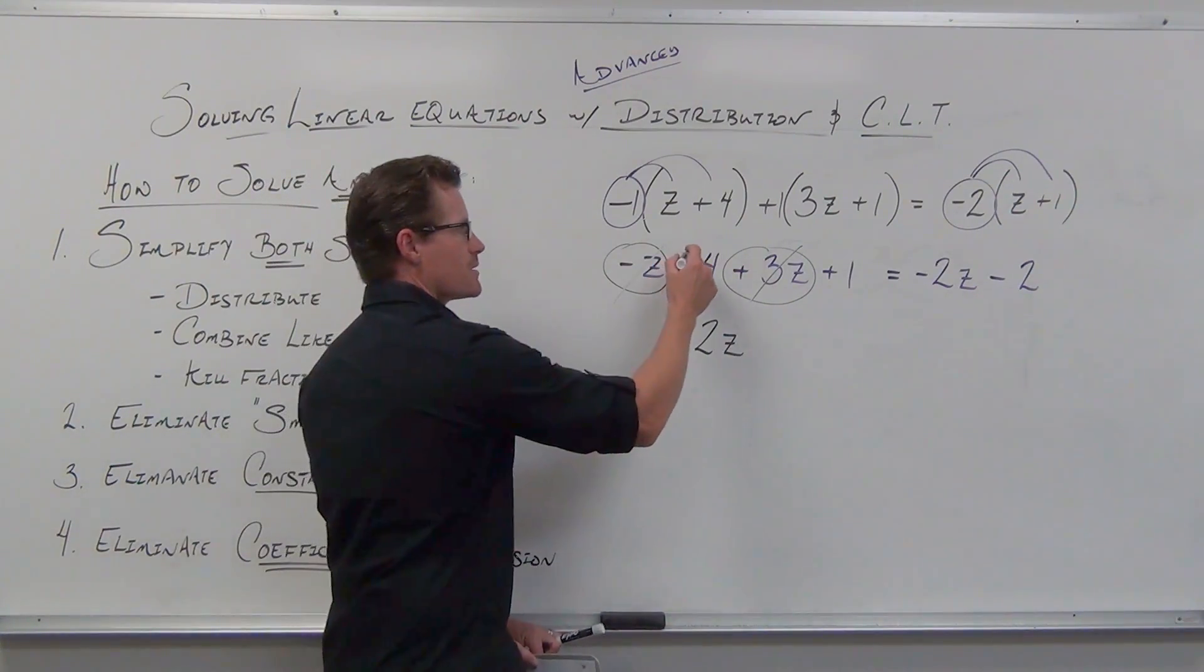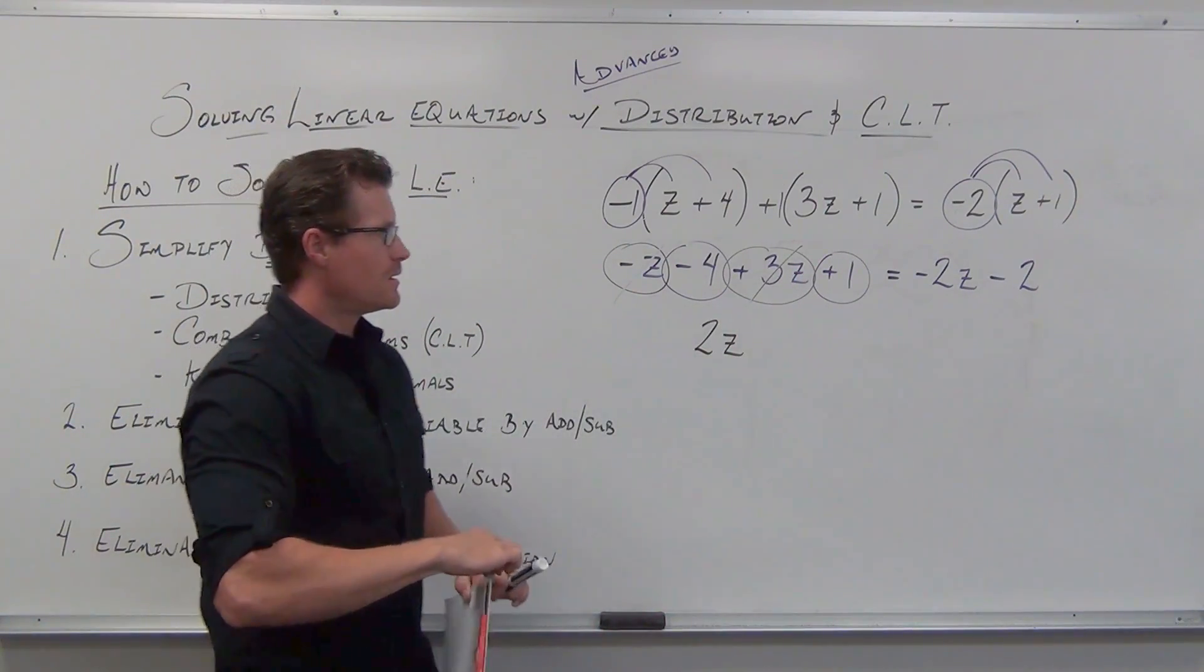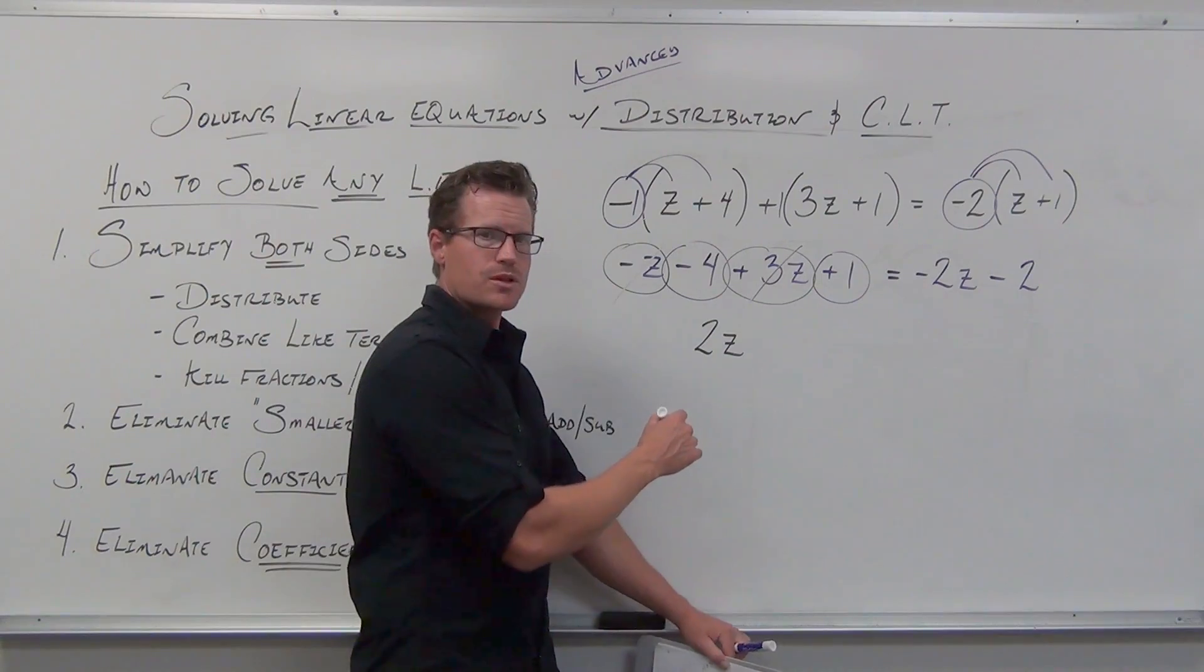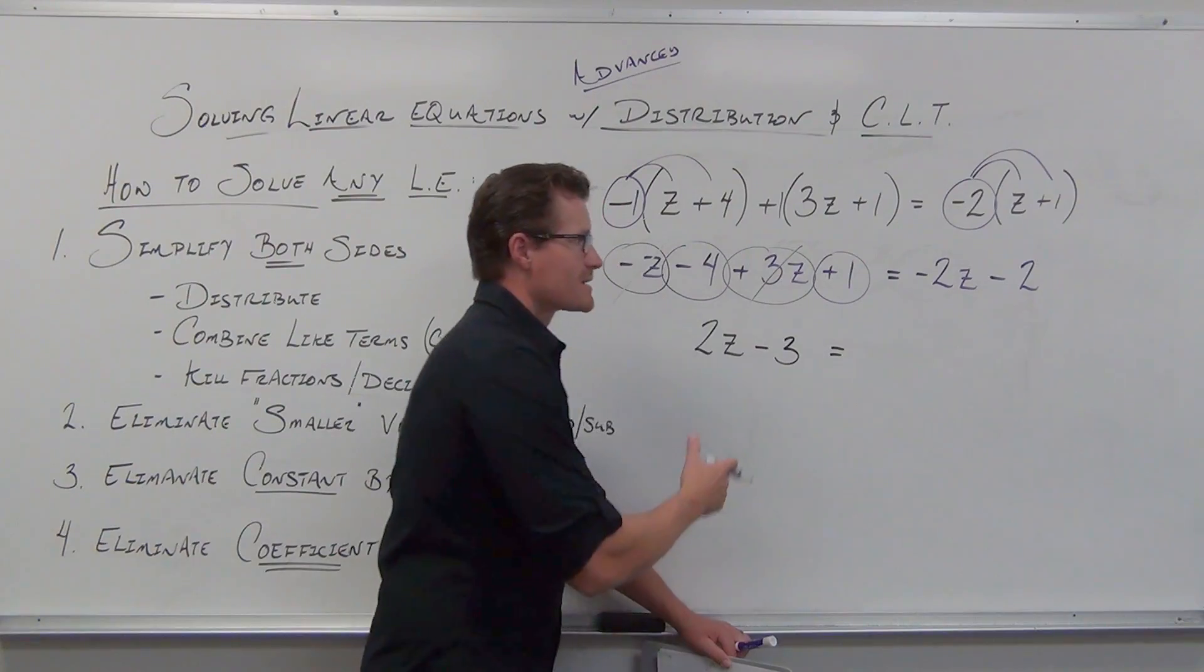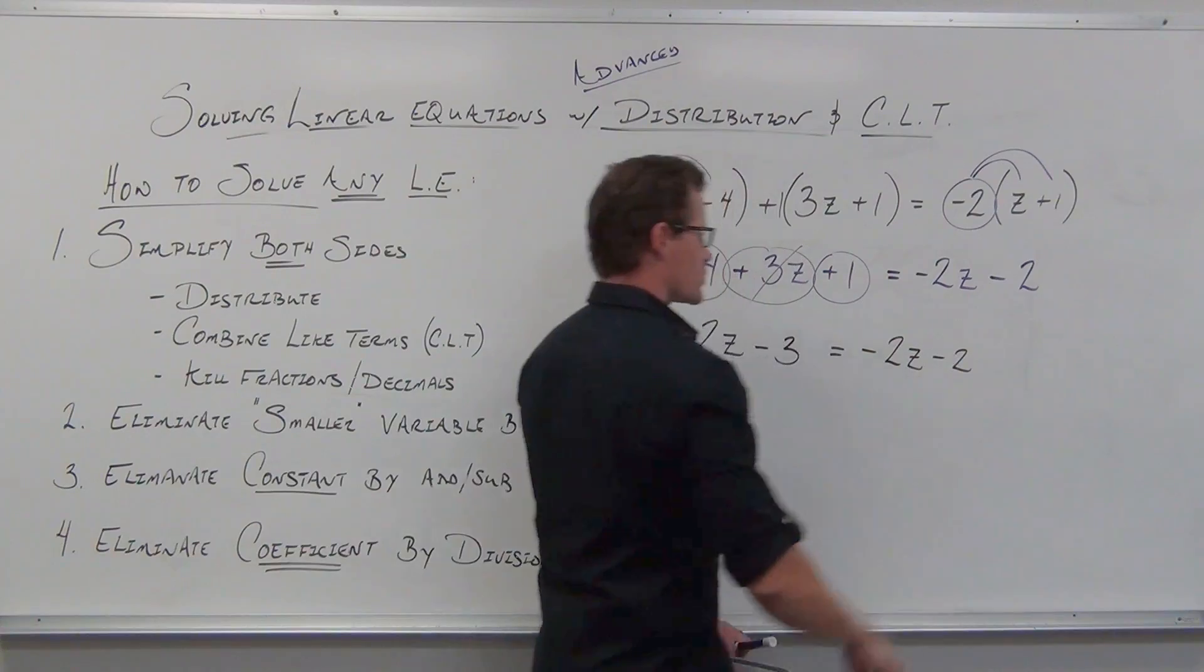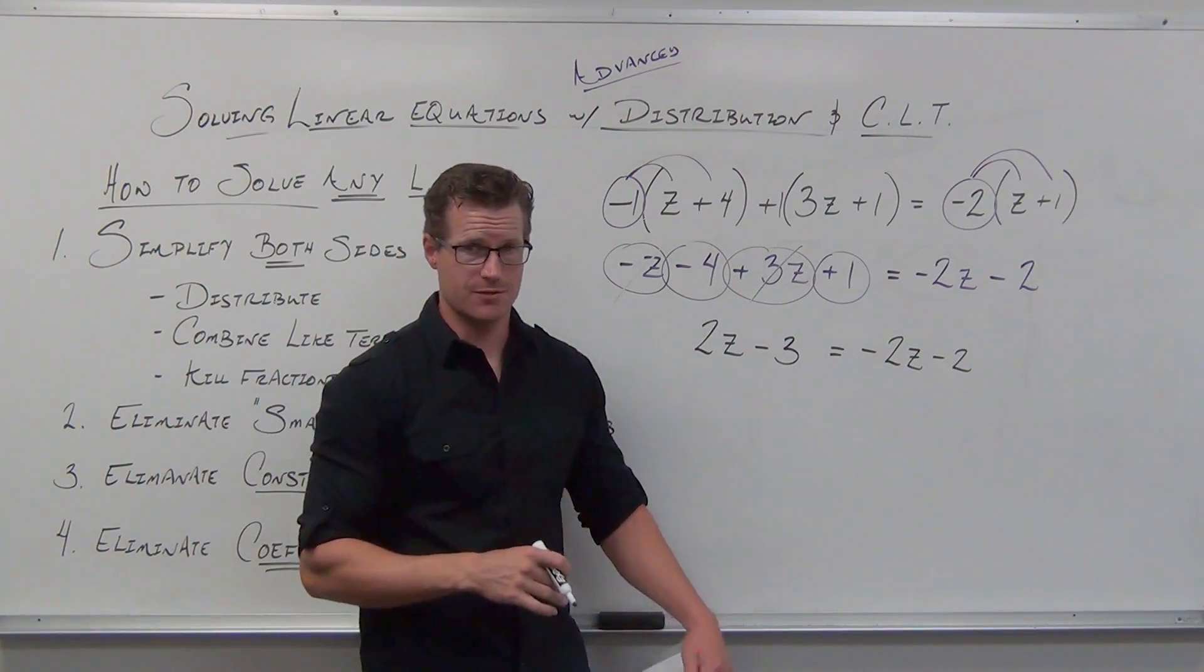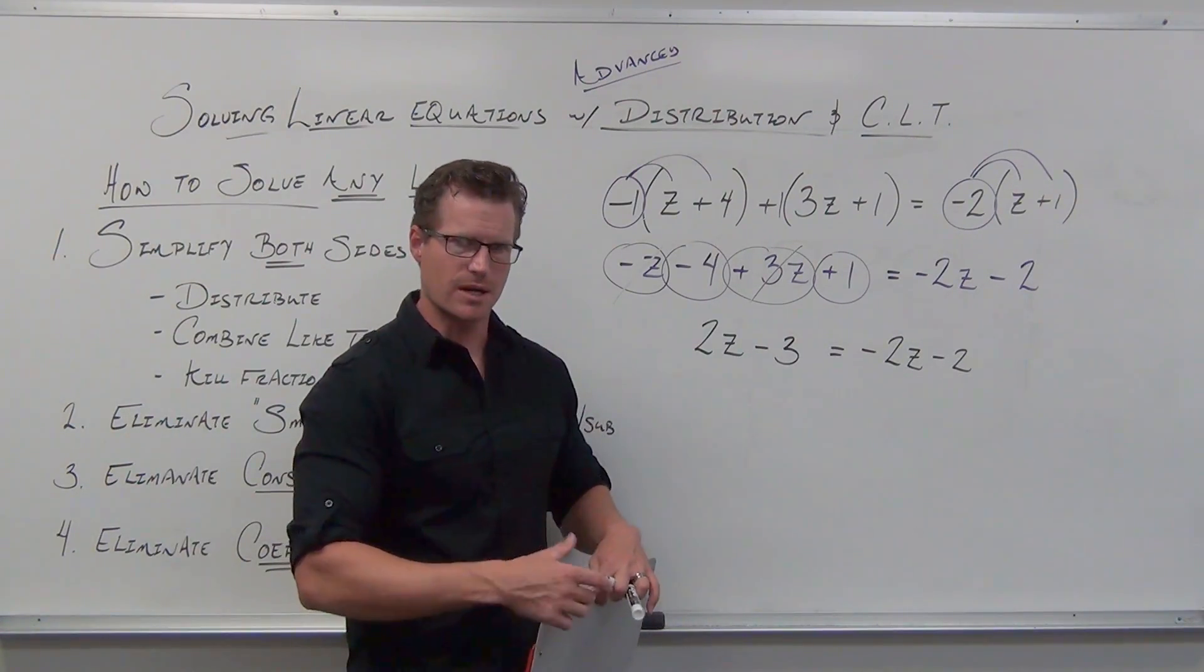And then I'm going to look for my constants. Constants have negative 4 and positive 1. Constants are automatically like terms because they don't have a variable. They are like terms. Negative 4 plus 1 is negative 3. I say negative. I write minus. On the right-hand side, we're just going to rewrite it. So step 1 is done. You have distributed. You combined like terms. You have four terms. You can have, at most, four terms after distribution and combining like terms. If you made it that far, that's awesome. It means you learned a lot about distribution and combined like terms.